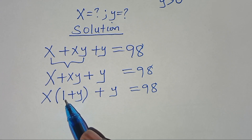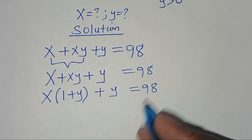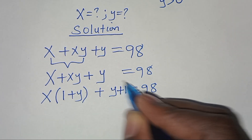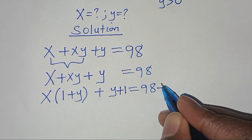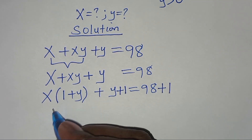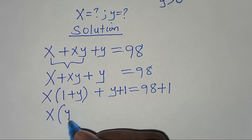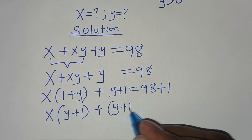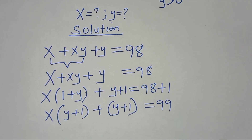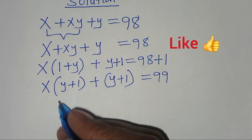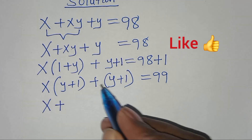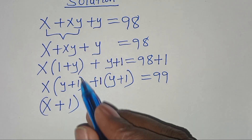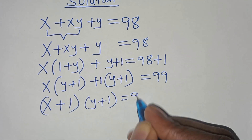Now to factor further, we have 1 plus y here, so we can add 1 on both sides, so that on the right hand side we have plus 1. So we have x times (y plus 1), then plus (y plus 1), this is equal to 99. So now here we have (x plus 1) times (y plus 1), this is equal to 99.